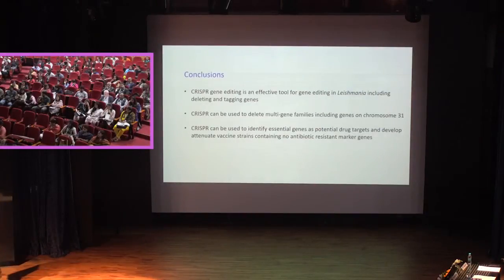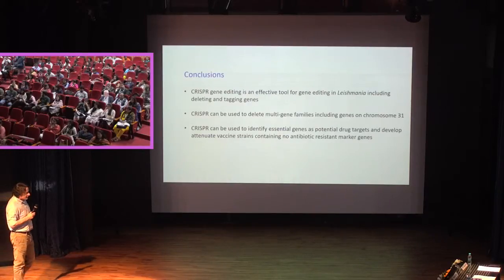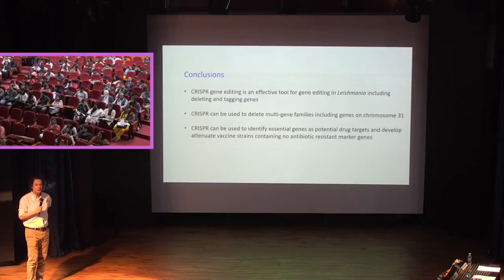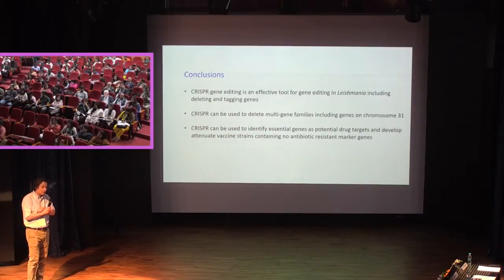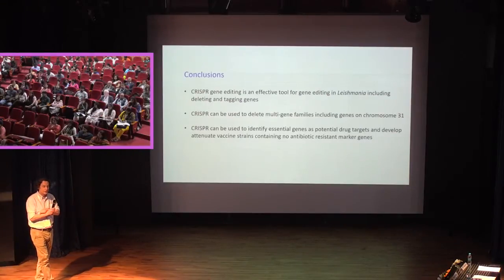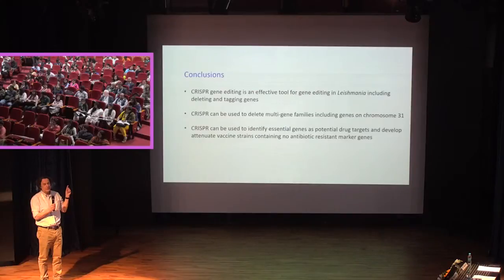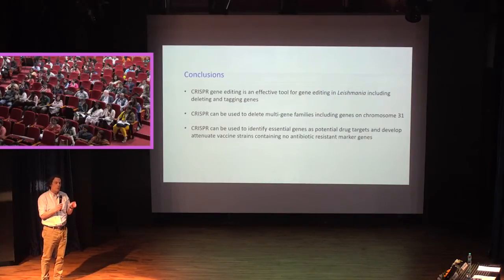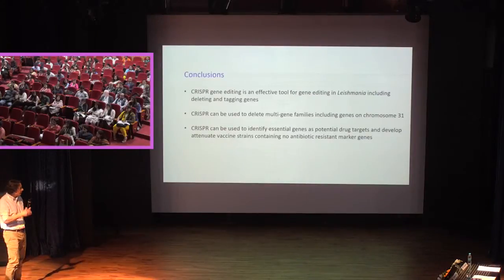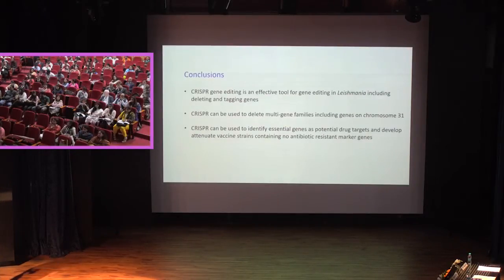One last thing about the vaccine: we say there's never been a vaccine for leishmania, but in fact that's not true. There is a vaccine called Leishmanization, used in a number of countries in the Middle East, where you're given an L. major infection on the skin — a small amount — it heals, and that person is immune for life. It's no longer used because it causes a lesion. What we're calling our approach is second generation Leishmanization: it works exactly the same way but doesn't cause the lesion, yet still gives the same protective immune response.